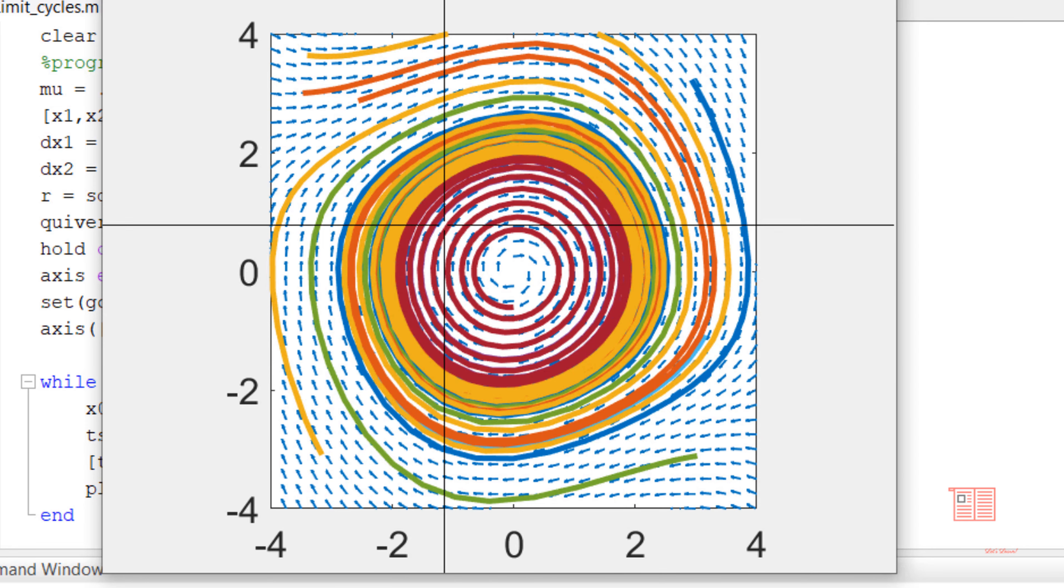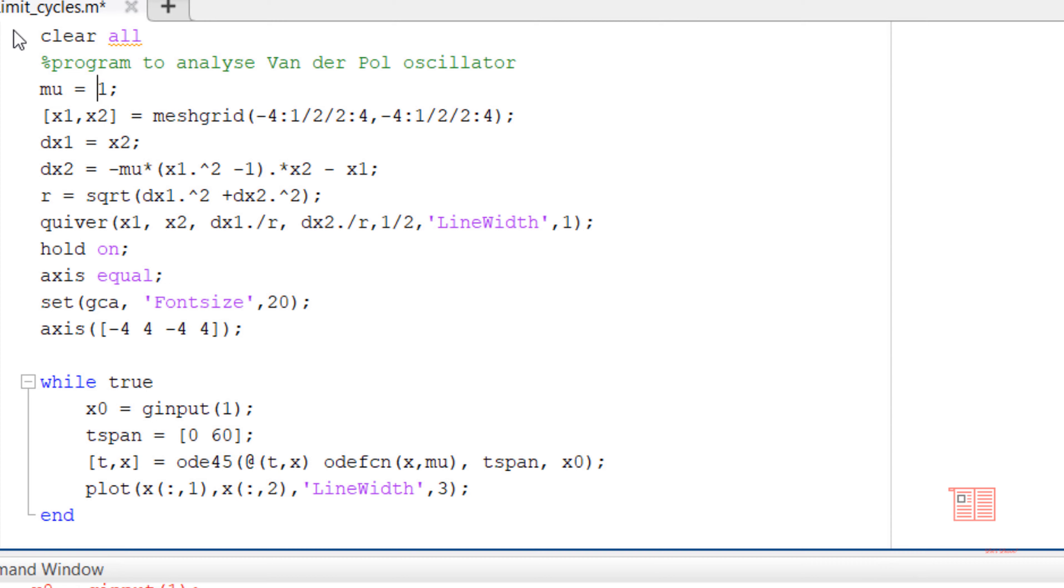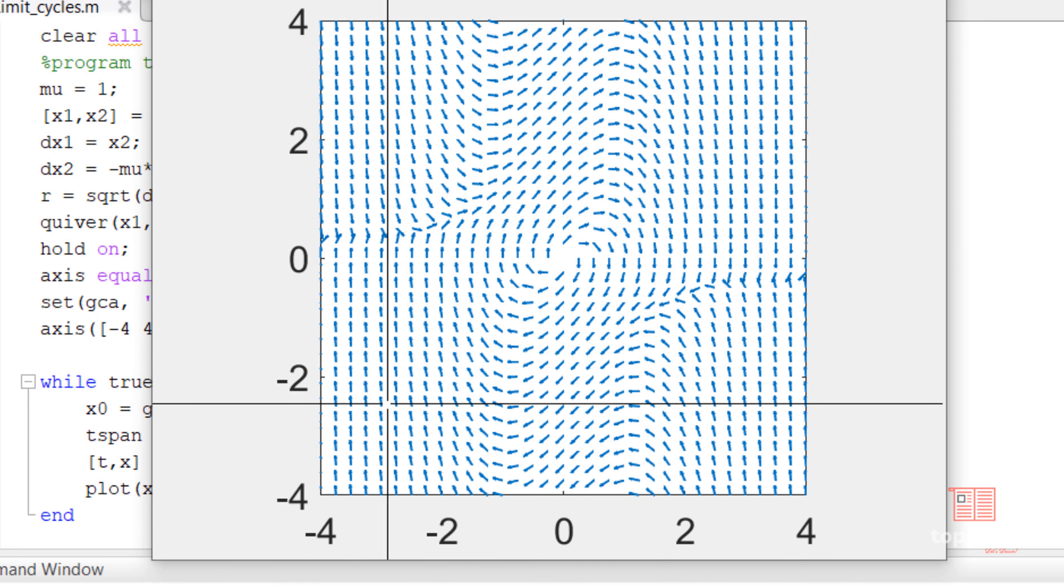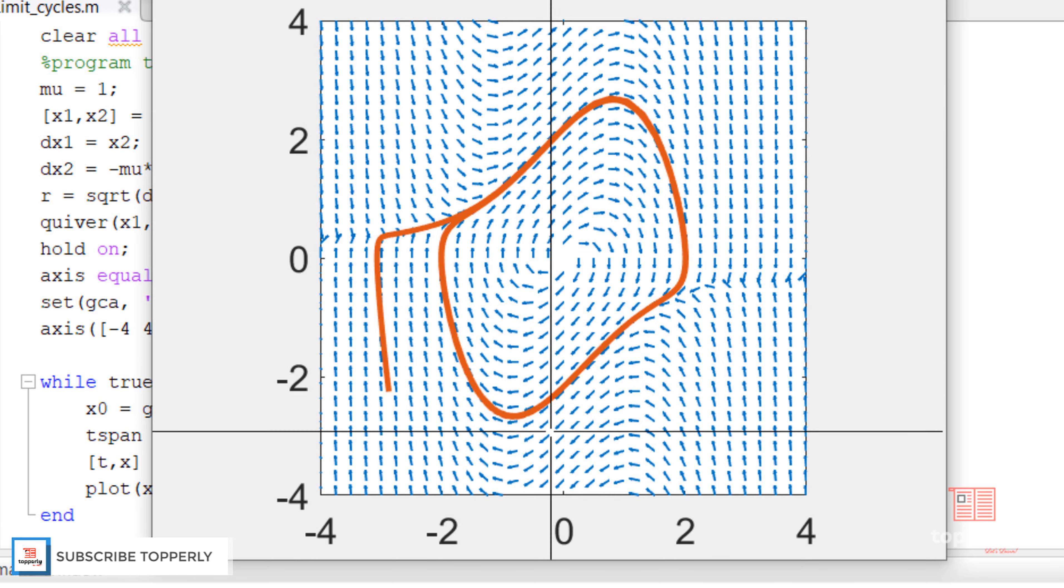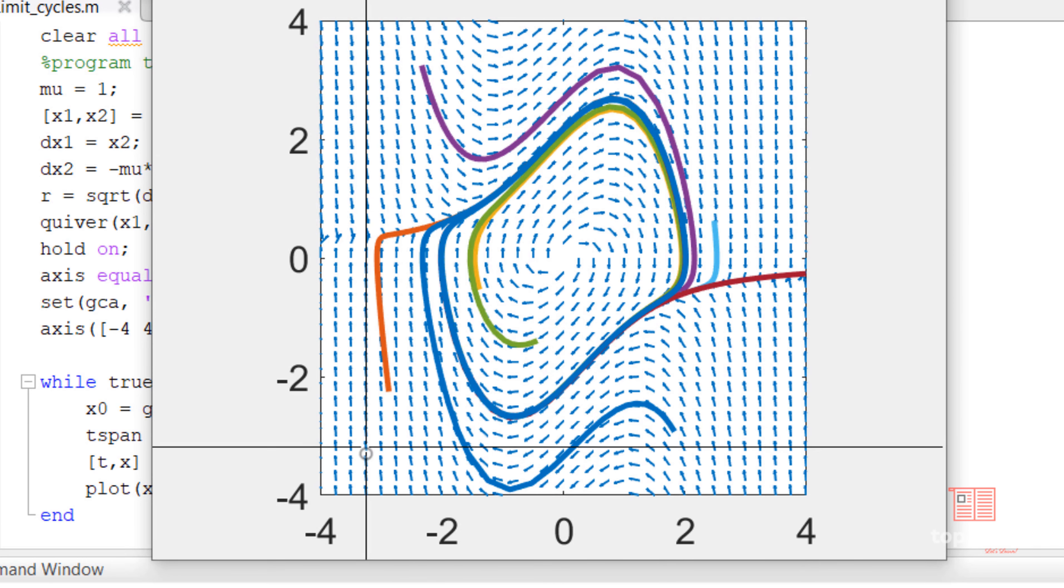Now, if I change the value of mu, let me change mu equal to 1. We will again draw the phase trajectories. If I plot a phase trajectory, you can see that again the trajectory has formed a closed loop but in a different shape. So this is the limit cycle for a Van der Pol oscillator.